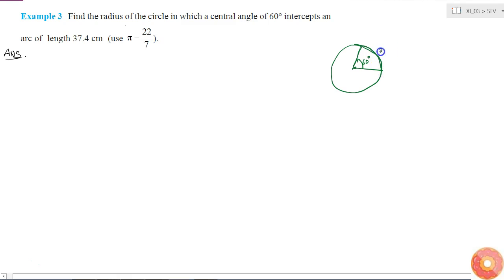I can convert this angle into radians. So what will be 60 degrees? 60 degrees is equal to 60 by 180 into pi radians, which is pi by 3 radians.